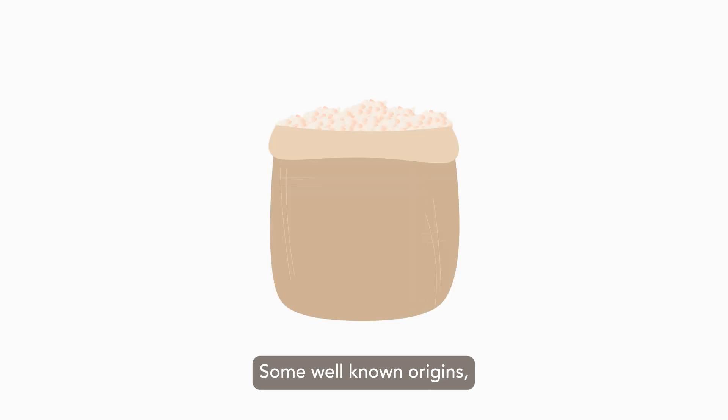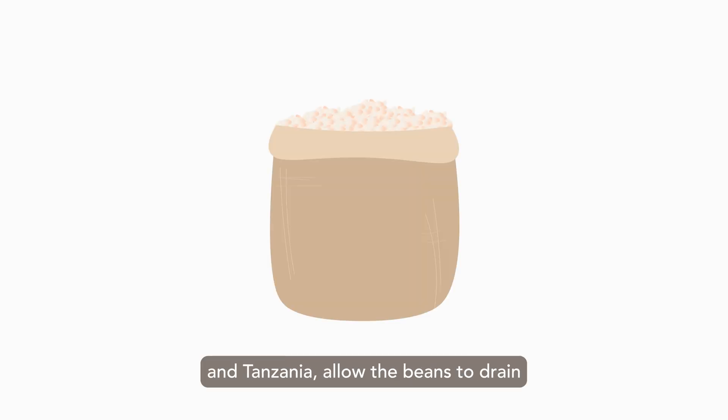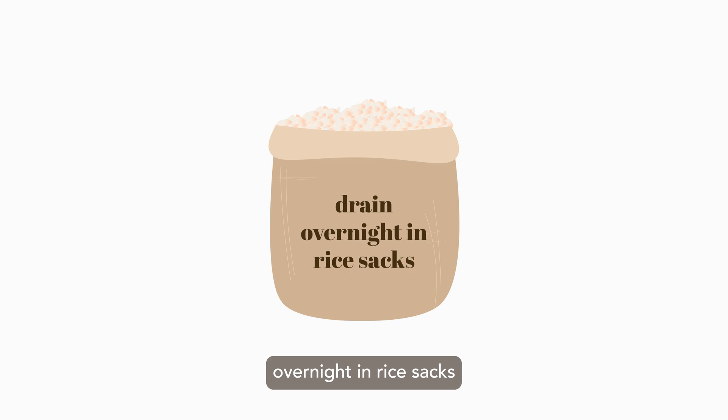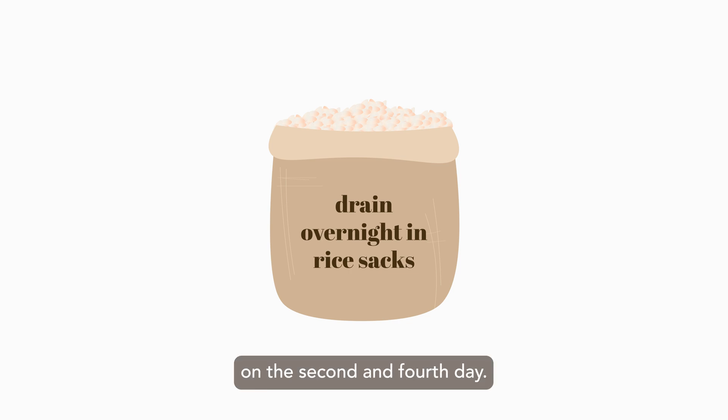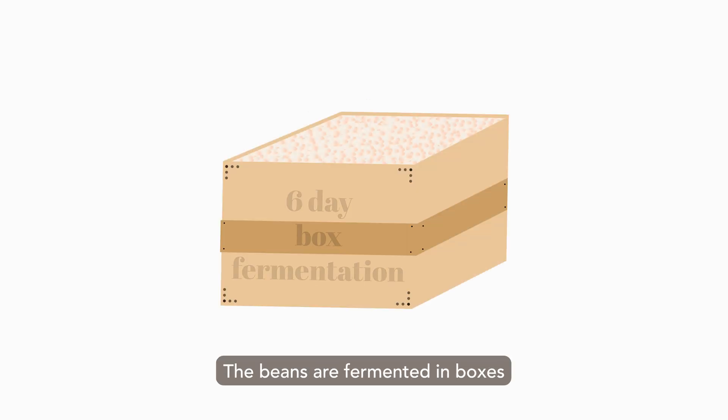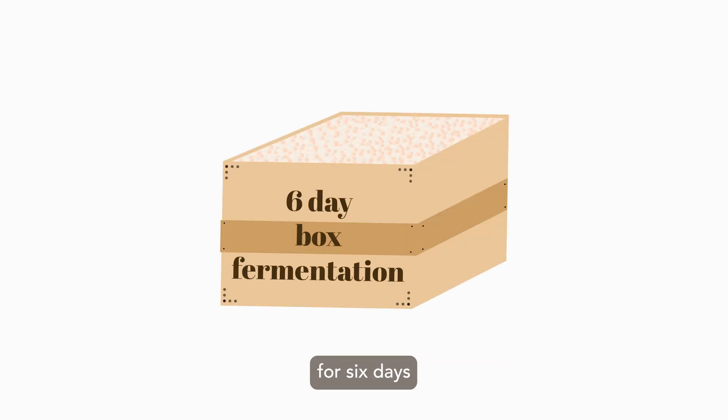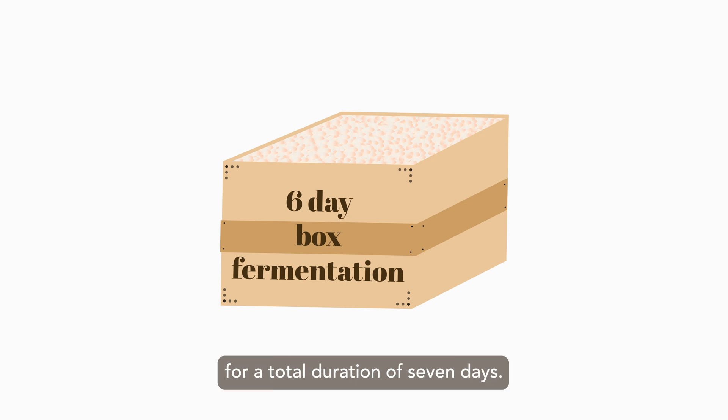Some well-known origins, including Uganda and Tanzania, allow the beans to drain overnight in rice sacks, with a turning on the second and fourth day. The beans are fermented in boxes for six days for a total duration of seven days.